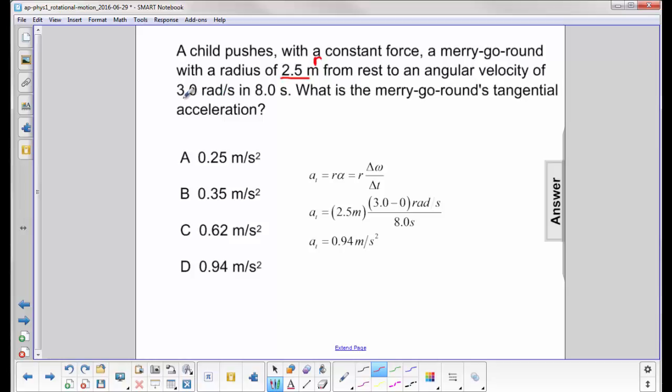Okay. And here is our final angular velocity, omega. Our initial is zero because it says we're at rest. And then we have to find tangential acceleration. So we now have the equation.